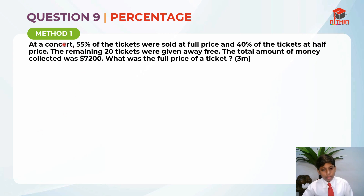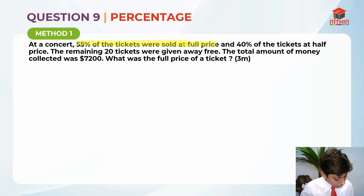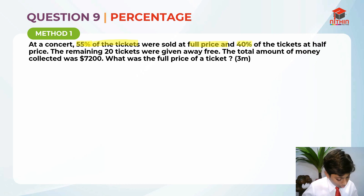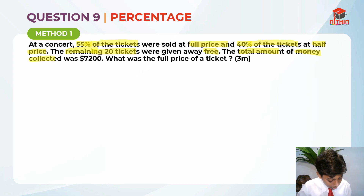Since we have read the question, should we solve it now? No! You must always underline and highlight the key information first, even if the question is really simple — sometimes questions can be simple but very tricky. So: 55% of the tickets were sold at full price, and 40% of the tickets were sold at half price. The remaining 20 tickets were given away free. The total amount of money collected was $7,200. What was the full price of a ticket?